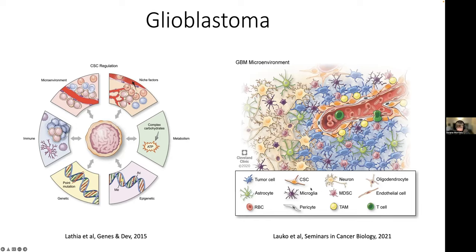A large part of this role is driven by microglia and these so-called MDSCs — myeloid-derived suppressor cells, which are basically macrophages. These are the immune cells resident to the brain — microglia — and then the recruited cells upon inflammation from systemic sources. This complex ecosystem is really what underlies the aggressiveness of the tumor and the ability of cells to survive treatment.